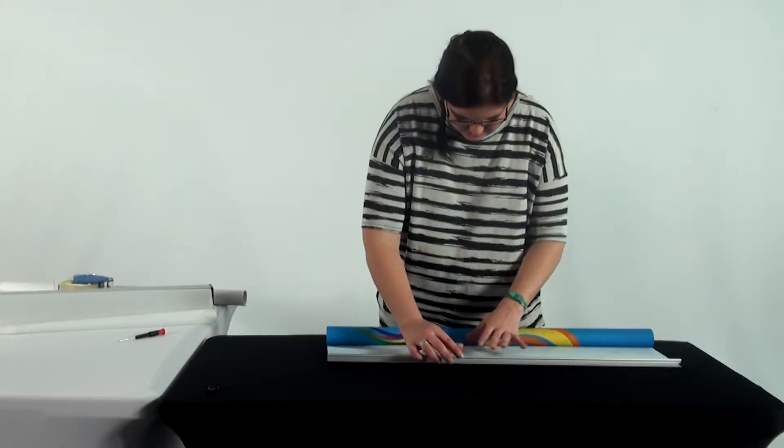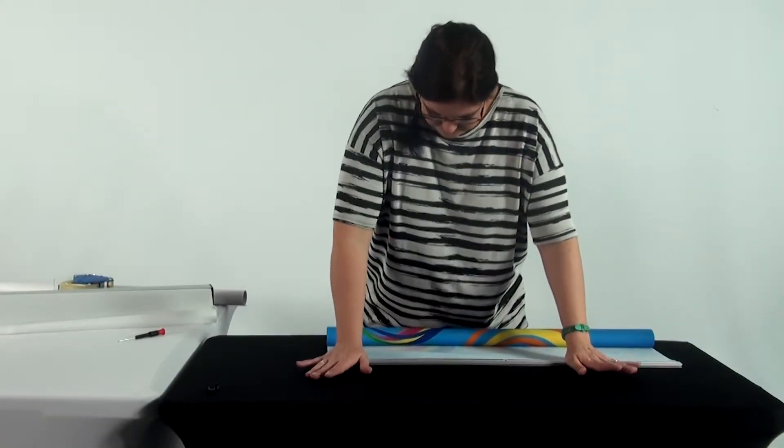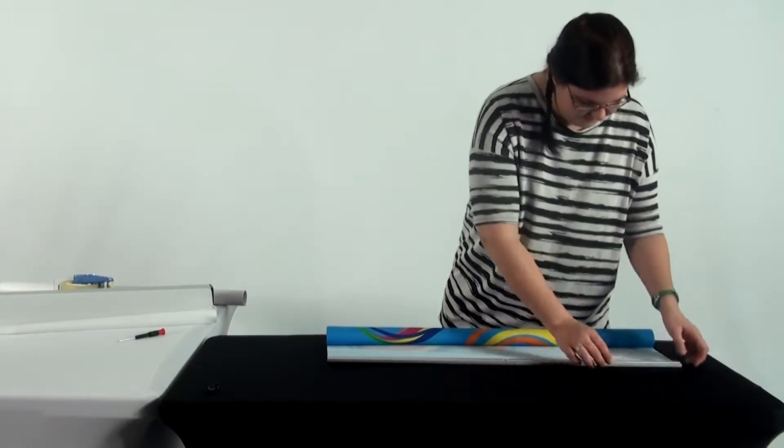With the print in position, use your hands to firmly press down onto the clamping rail. This will reseal the clamping rail to your new banner.